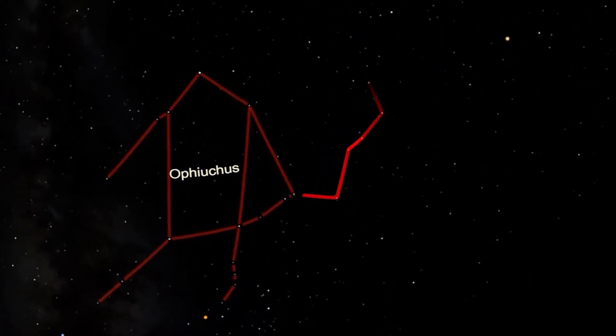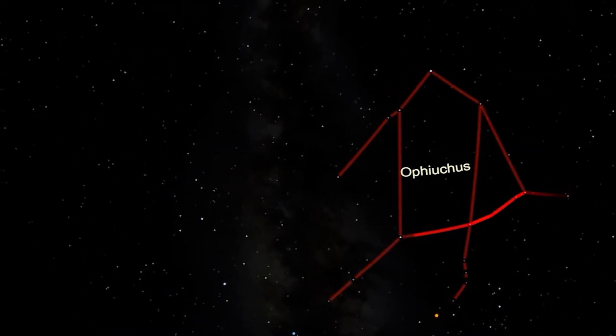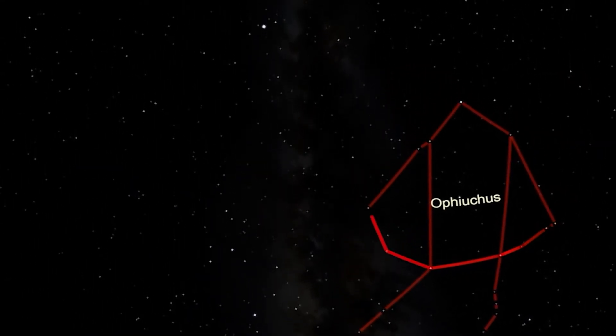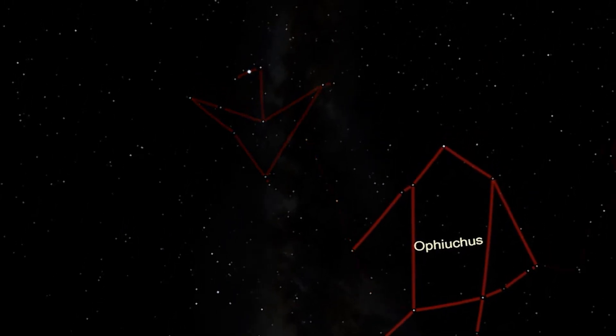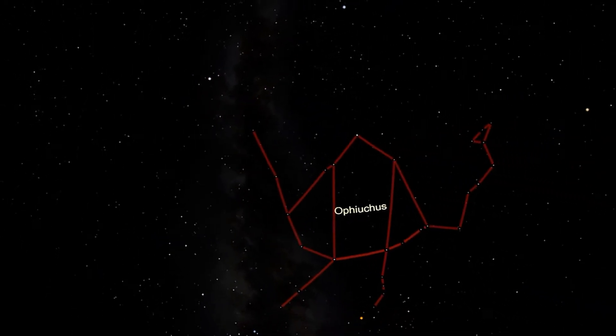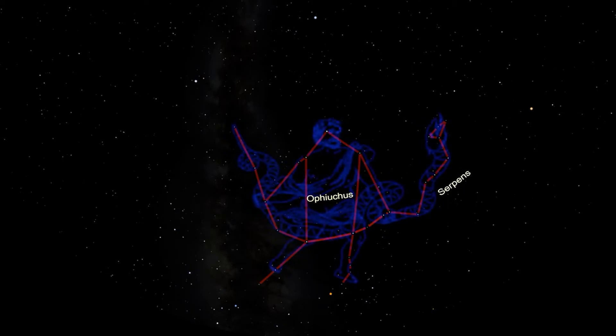We pick Serpens up again on the other side of Ophiuchus. Serpens Cauda extends out to the east and curves upwards, the tail ending just below the wing of Aquila. Even though Serpens is divided into two parts, the head and the tail, Caput and Cauda, it is considered one constellation.